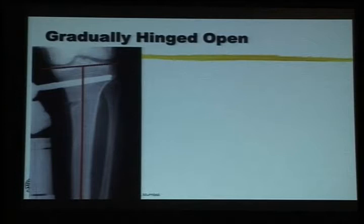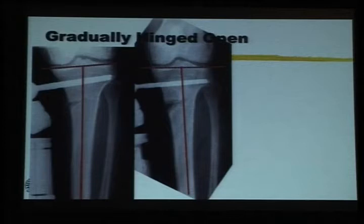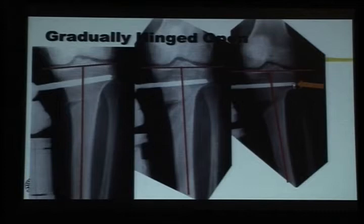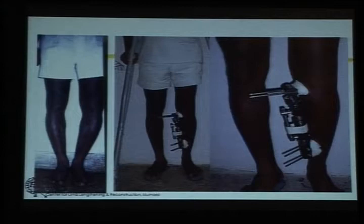This is the immediate post-op picture. Over a period of usually two to three weeks, by distraction at one millimeter per day, this changes from varus of the proximal tibia to a significant amount of valgus. Notice in the pictures from left to right that the lateral cortex is intact and all the hinging has taken place around the area at the tip of the fibula. So a patient whose varus looked like this at the start looks like what you see on the right at the end of three weeks.